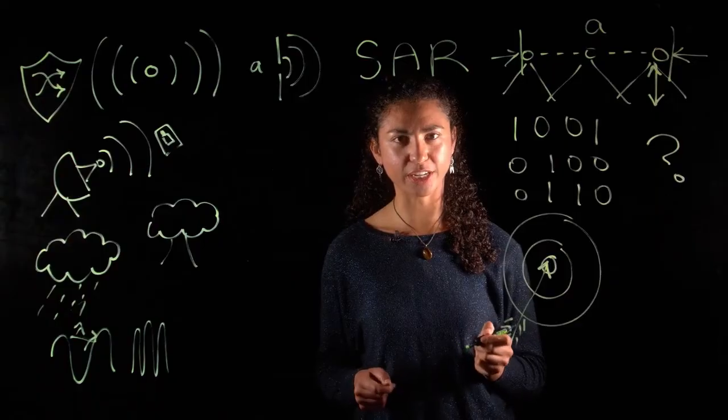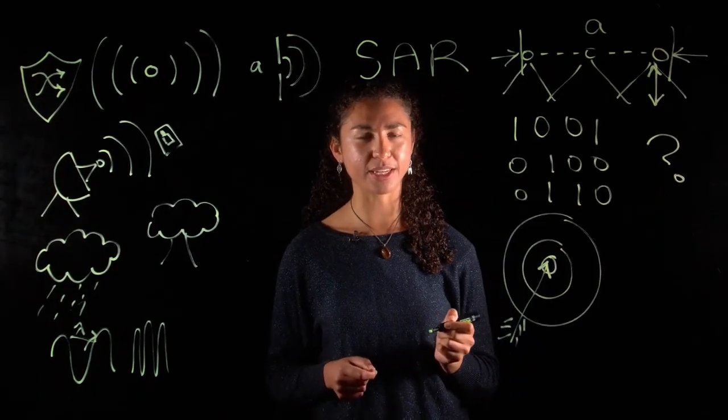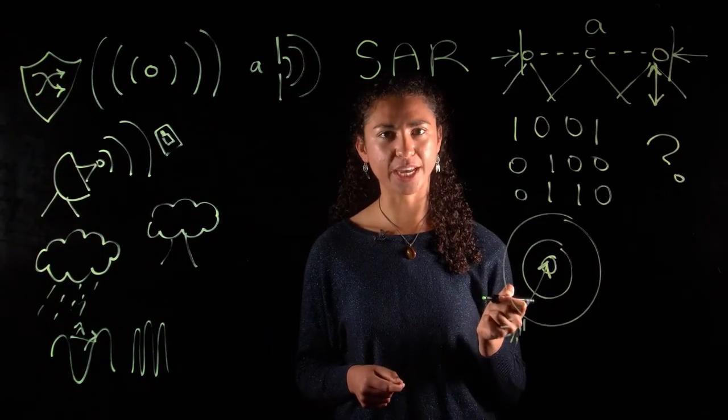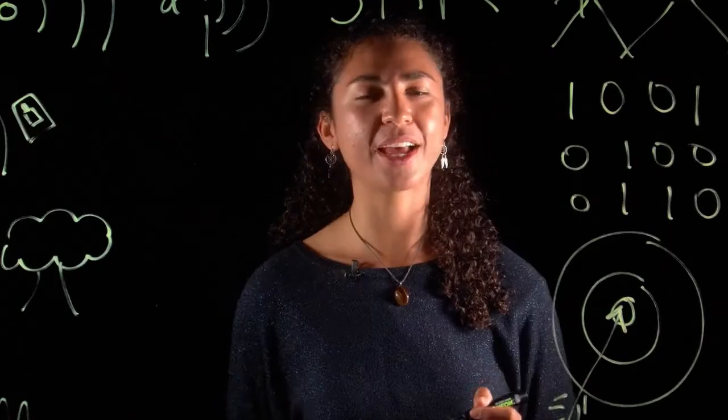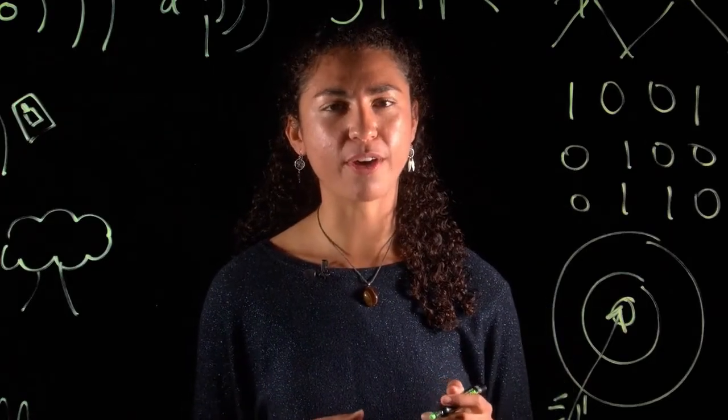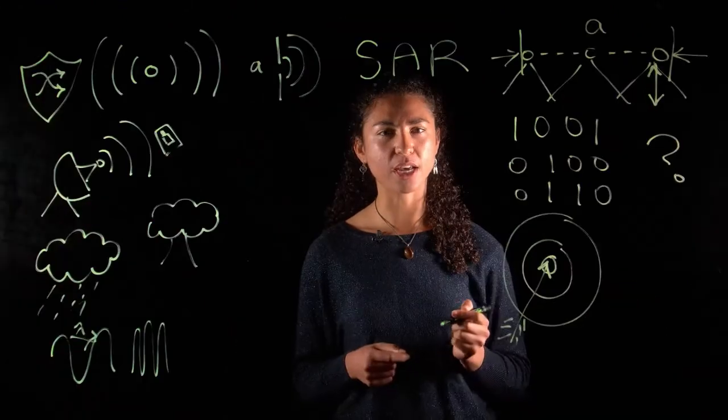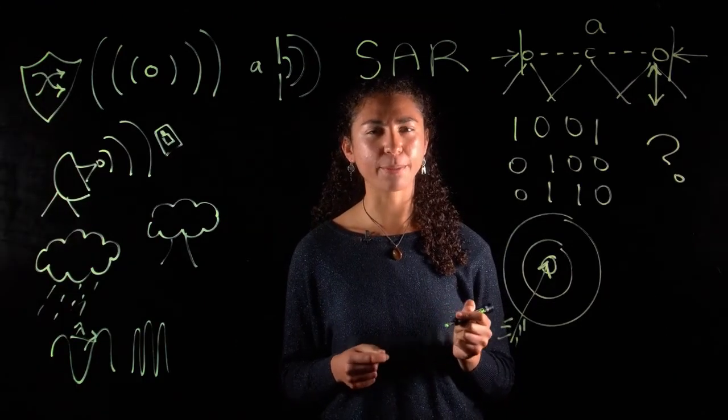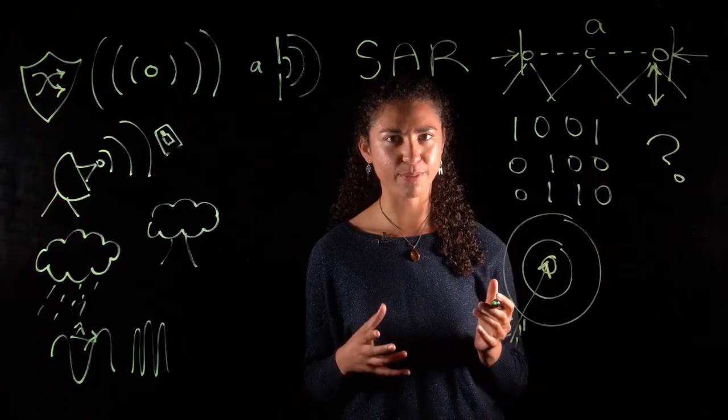Automatic target recognition is now being implemented and can detect and classify objects in SAR images. This is one example of how advanced signal processing and artificial intelligence can be used to filter through vast amounts of information.